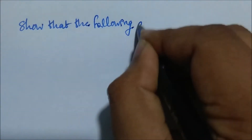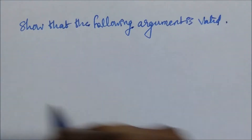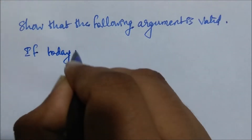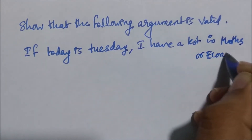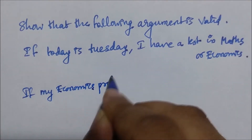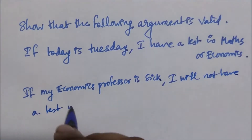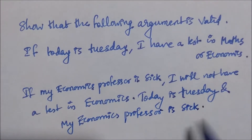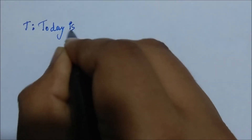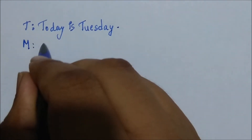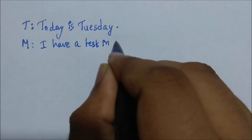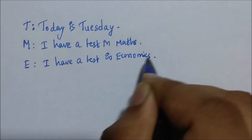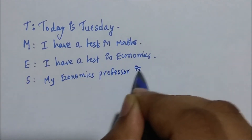Here is a question that asks us to show that the argument is valid. The argument goes like this: if today is Tuesday, I have a test in maths or economics. If my economics professor is sick, I will not have a test in economics. Today is Tuesday and my economics professor is sick. Therefore, I have a test in maths. We will represent each sentence using propositional variables: let T denote 'today is Tuesday', M denote 'I have a test in maths', E denote 'I have a test in economics', and S denote 'my economics professor is sick'.